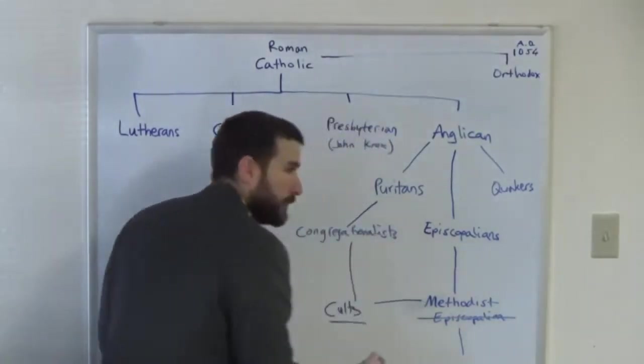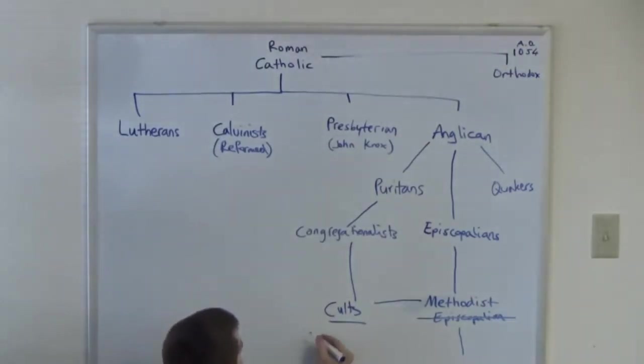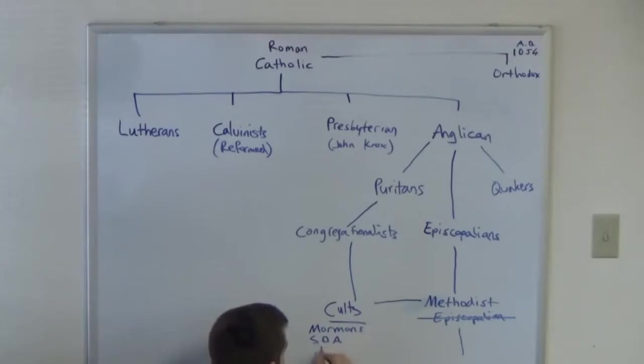What do I mean by the cults that came out of these groups? We have of course, and I'm running out of room on my board here, but we have of course what are the major cults? Mormons, right? Mormons 1830. You've got your Seventh-day Adventists, you've got your Jehovah's false witnesses, and you've got of course the Campbellites.